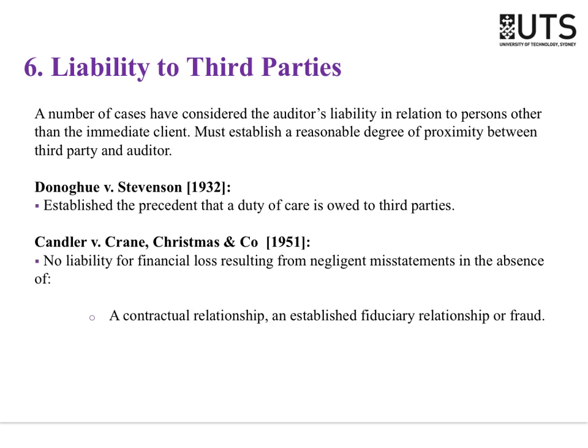Now, third parties. We talked about the avenues available to the client. Third parties are anybody else that's not the client. A common misconception is that people think individual shareholders are the clients — no. The body of shareholders as a whole is the client. Third parties include individual shareholders, creditors, the bank, suppliers, customers, and future investors — anyone not in the contract between the auditor and the client.